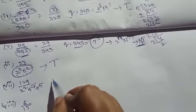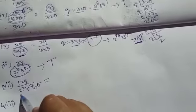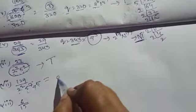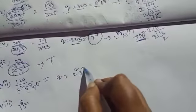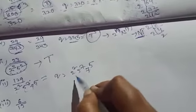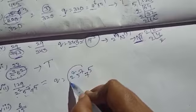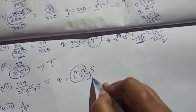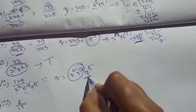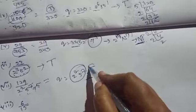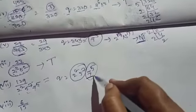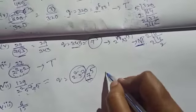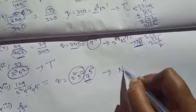Next: 129 by 2 square 5 power 7 into 7 power 5. Here q is 2 square into 5 power 7 into 7 power 5. We have 2 and 5, but there is an extra 7 power 5. Since it has a factor other than 2 power n, it is a non-terminating decimal.